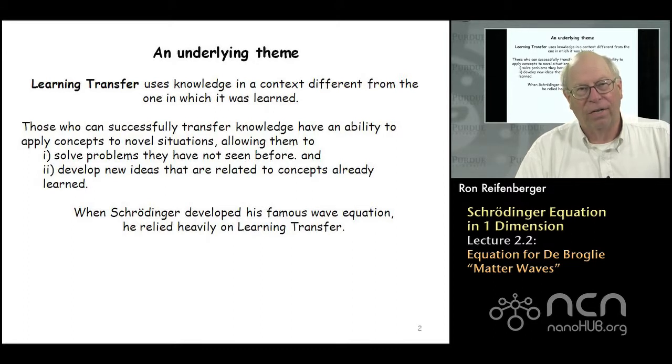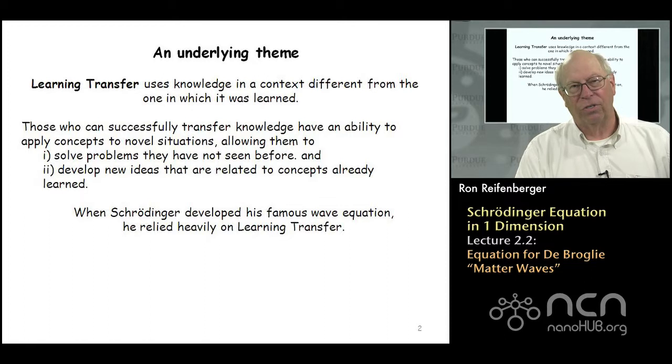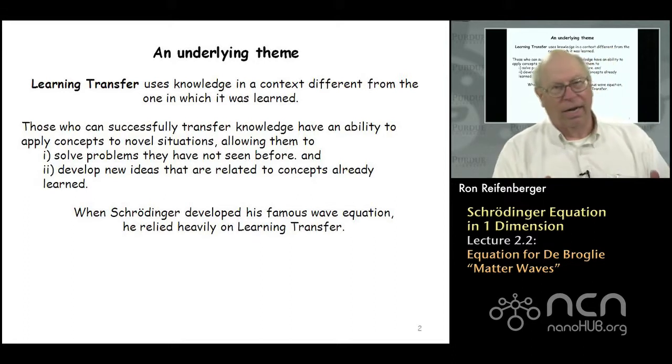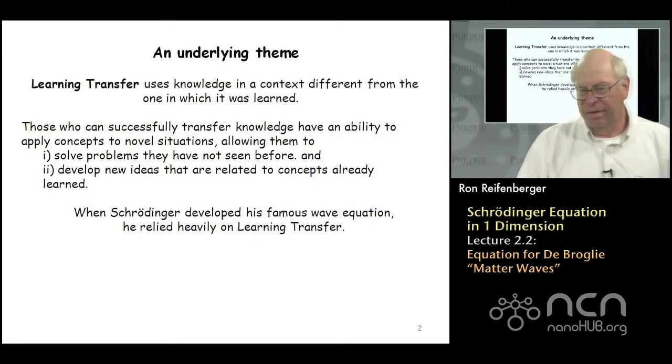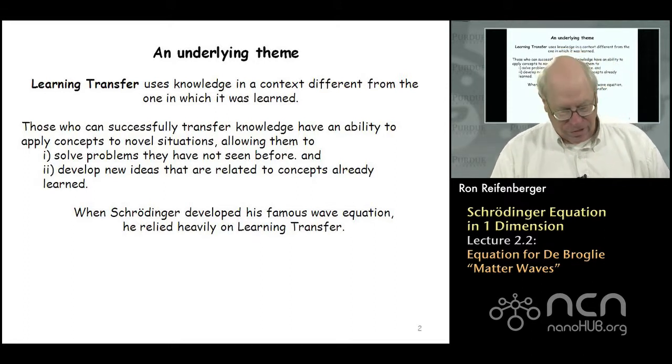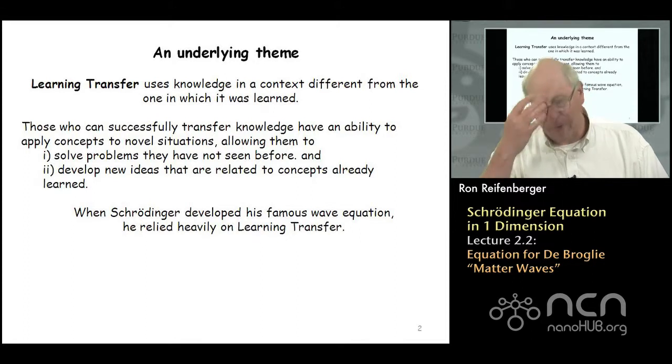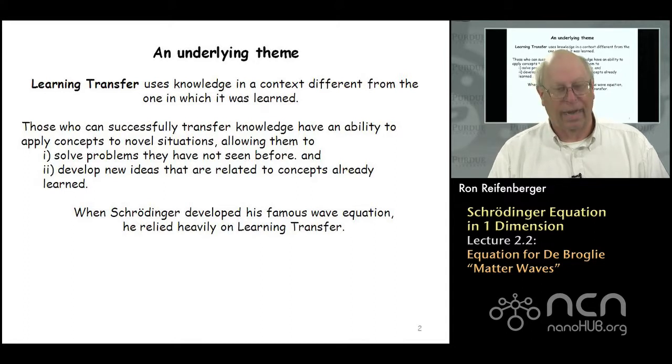So this is essentially what Schrodinger went through when he derived his equation. And I always like to point out that his work was one of the first examples of learning transfer. This is a topic that you'll hear a lot about if you go to conferences on how better to teach students. Schrodinger somehow pulled this off without even knowing the words in the context of the words.